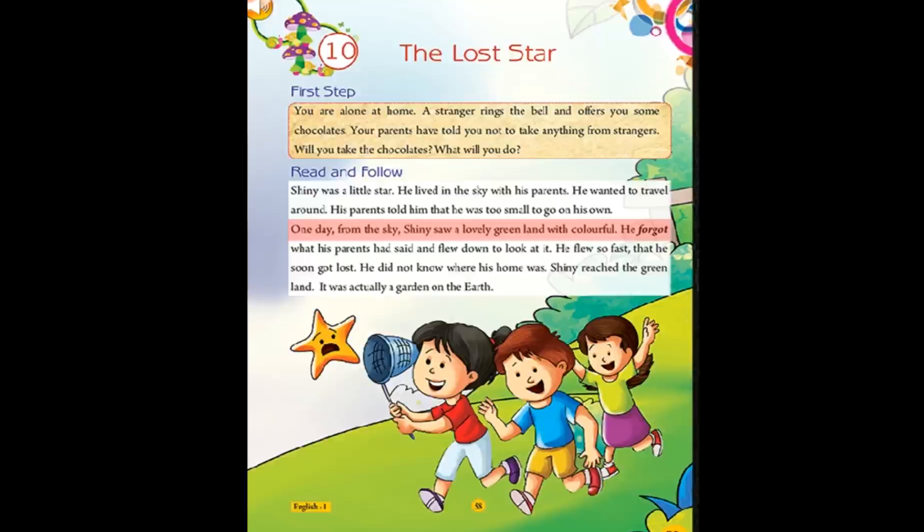One day, from the sky, Shiny saw a lovely green land with colorful flowers. He forgot what his parents had said and flew down to look at it. He flew so fast that he soon got lost. He did not know where his home was. Shiny reached the green land. It was actually a garden on the earth.